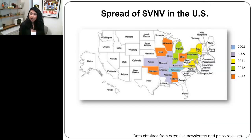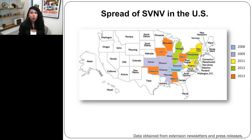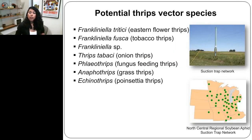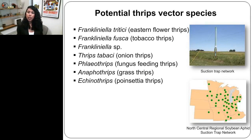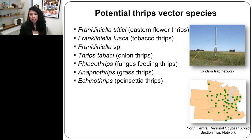This shows the current spread of SVNV. Within just five years, the disease spread to most major soybean growing areas and is now found in Ontario, Canada. It's possible it's also present in other soybean growing regions of the Midwest like Minnesota, South Dakota, North Dakota, and Nebraska. We surveyed soybean fields using suction traps, which sample the air and collect thrips. We found up to eight different species in Indiana, and these traps are distributed throughout the Midwest.